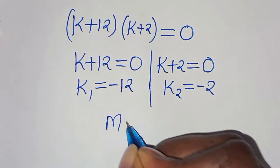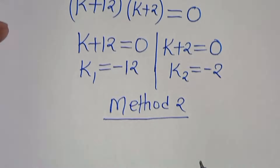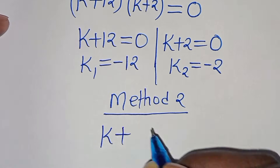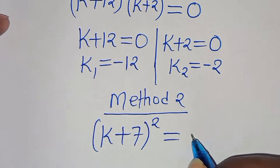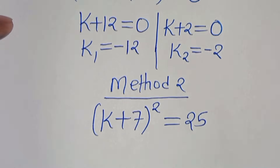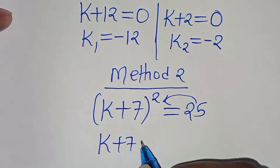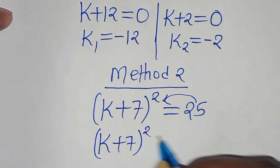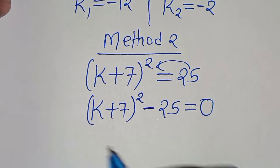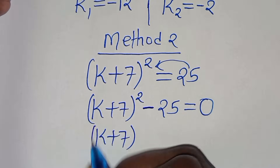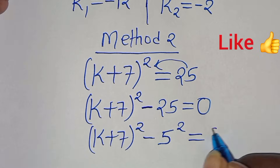Now let's move to Method 2. Remember we have k plus 7 to the power of 2, this is equal to 25. Let's take 25 on the left hand side so that we have (k+7)² minus 25 equals zero. Now this is (k+7)² minus 5², which is equal to zero.